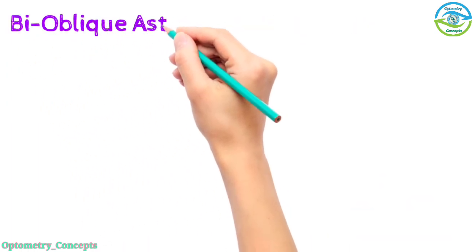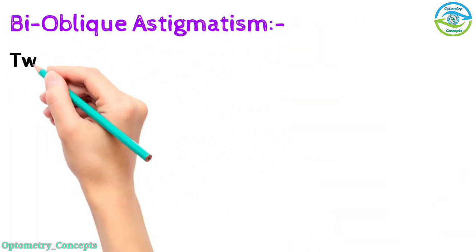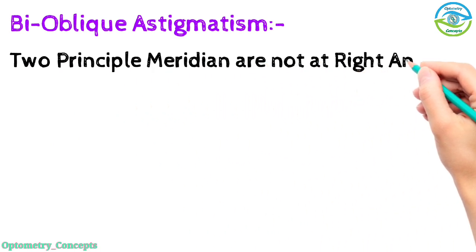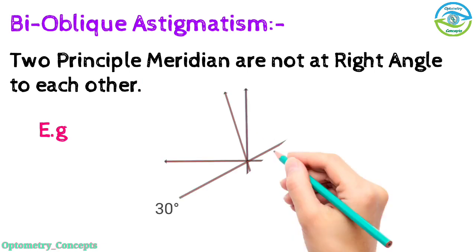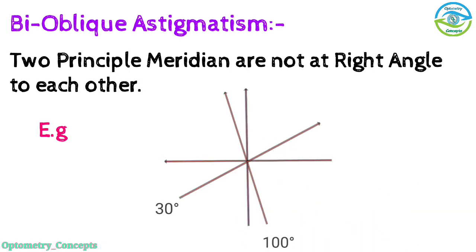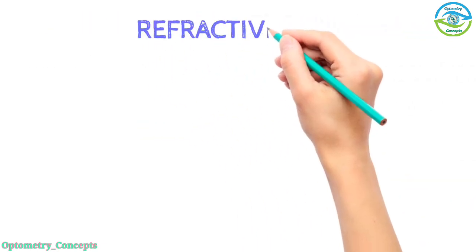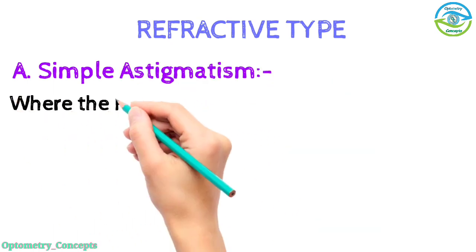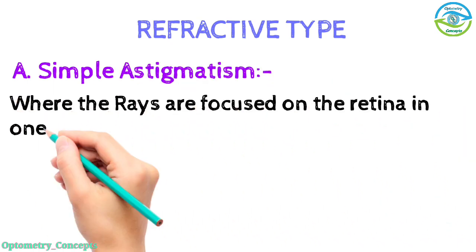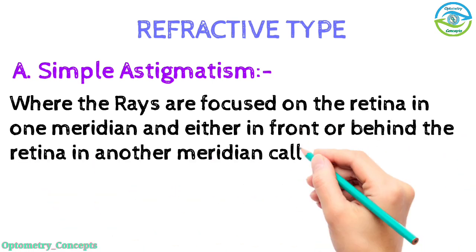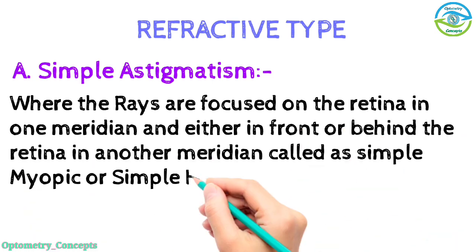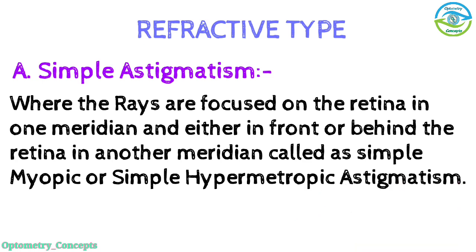Bi-oblique astigmatism - two principal meridians are not at right angle to each other. Simple astigmatism - where the rays are focused on the retina in one meridian and either in front or behind the retina in another meridian, called as simple myopic or simple hypermetropic astigmatism respectively.